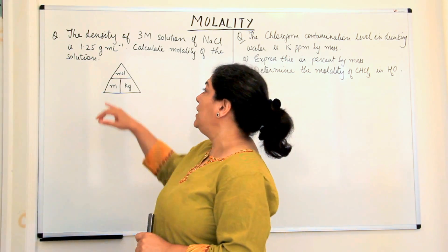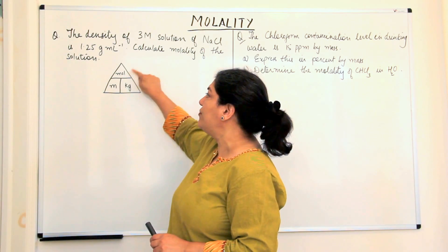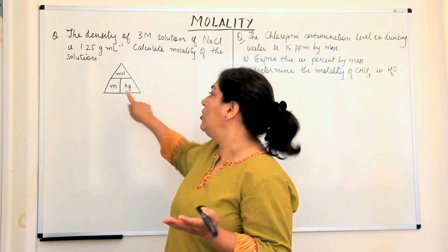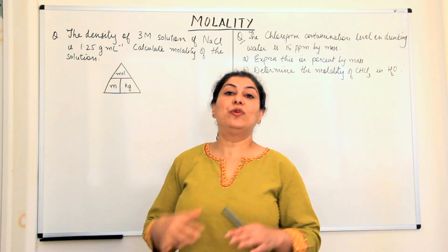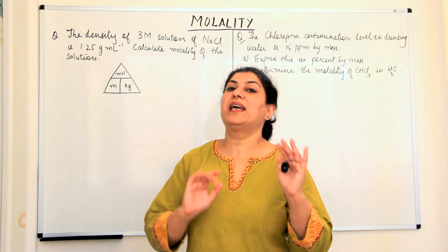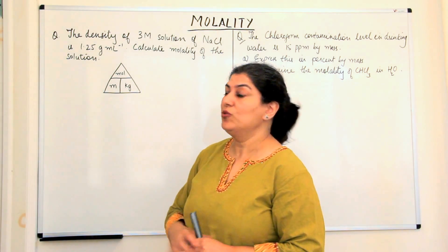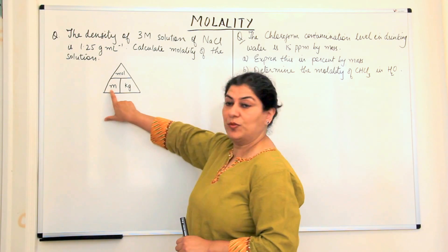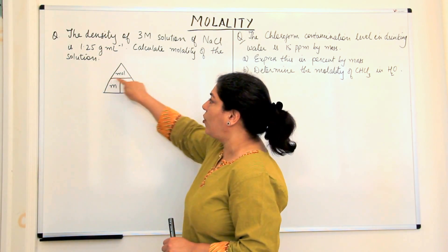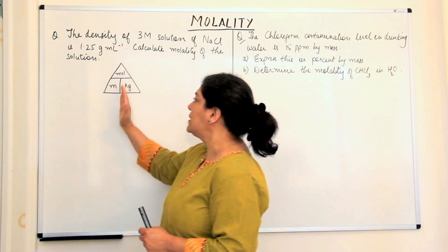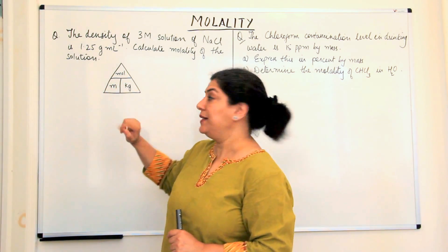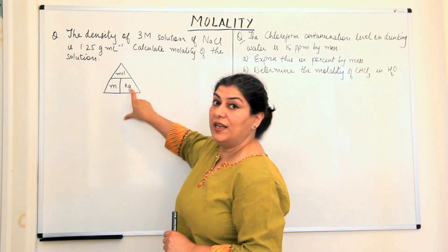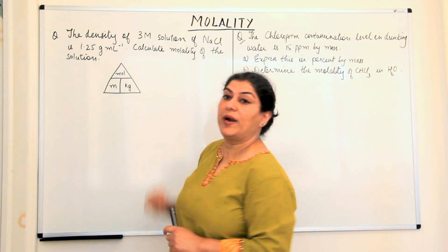So what would the equation be? Molality is equal to number of moles of solute divided by the mass of the solvent in kilograms. We can make a triangle which makes calculations very easy and helps you always arrive at the right formula. The horizontal line means division and the vertical line means multiplication. So molality equals moles of solute upon kilograms of the solvent.